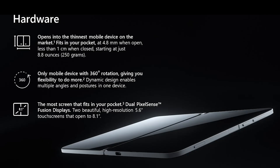Before we drill down even more into the software, let's cover some of the unique hardware features that the Surface Duo has. This device is the thinnest screen on the planet. It's 4.8mm when it's open and less than a centimeter when it's closed. The device has 8.1 inch when fully open, with two panes of 5.6 inch each.